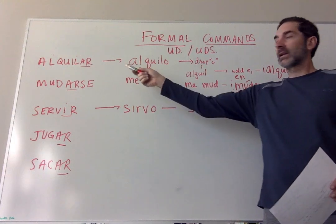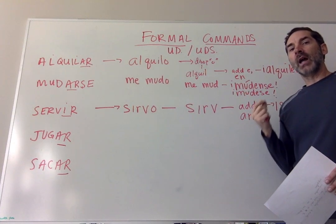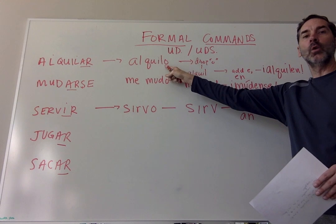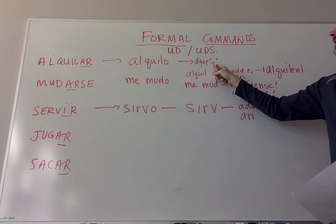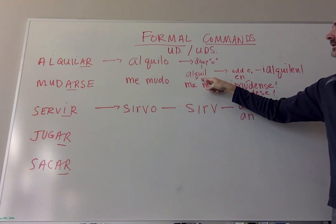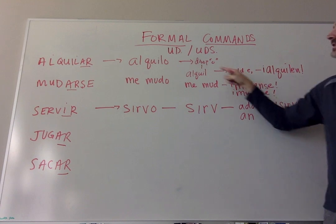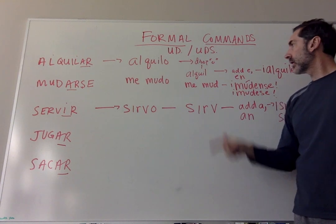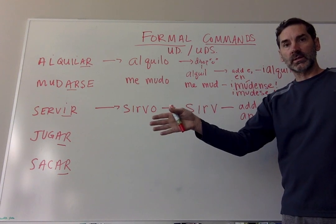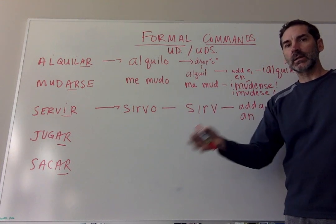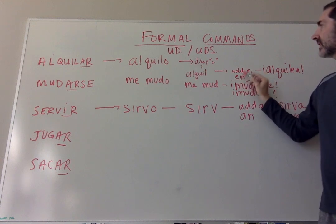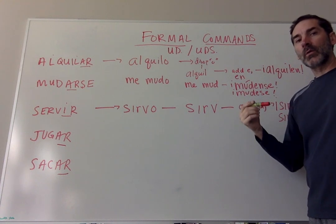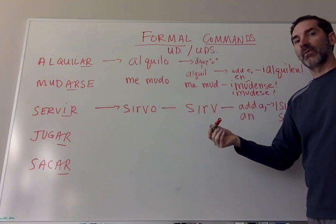Let's start with our first verb: alquilar, which means 'to rent.' First step — you take alquilar, an AR verb, and you conjugate it in the yo form. You're left with alquilo, 'I rent.' Drop the O, you get alquil, and then you add an E or an EN depending on if your subject is usted or ustedes. So it's alquile — 'rent' — or alquilen — 'you all, rent.' The key thing to notice is that you're adding opposite endings to the AR verb: ER and IR endings rather than AR endings to get the command form.